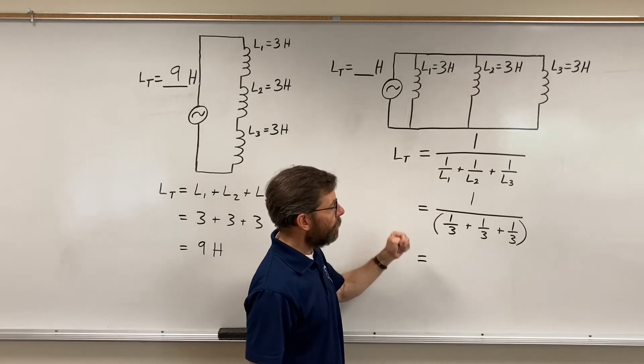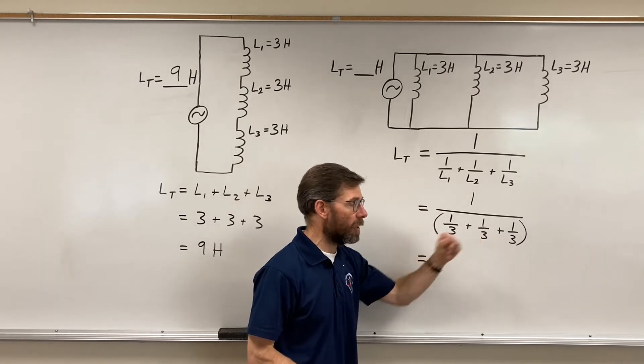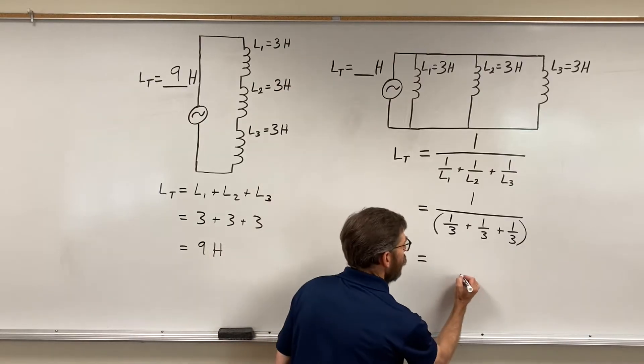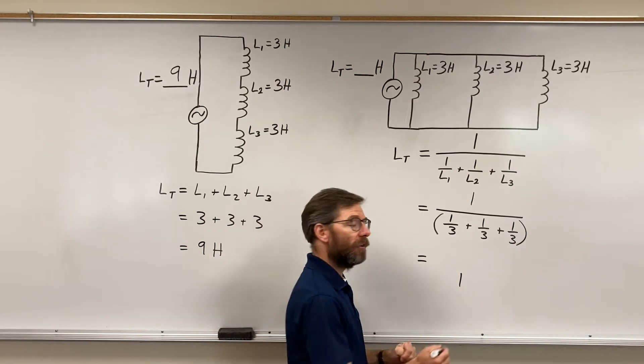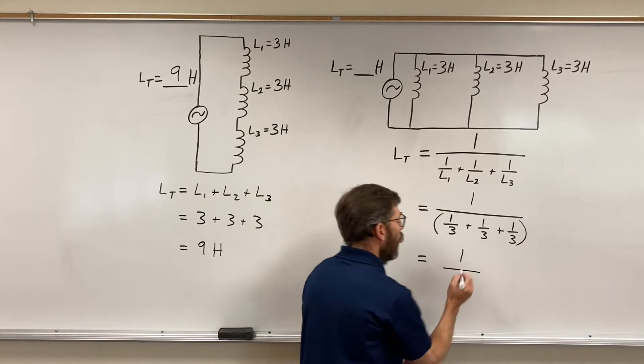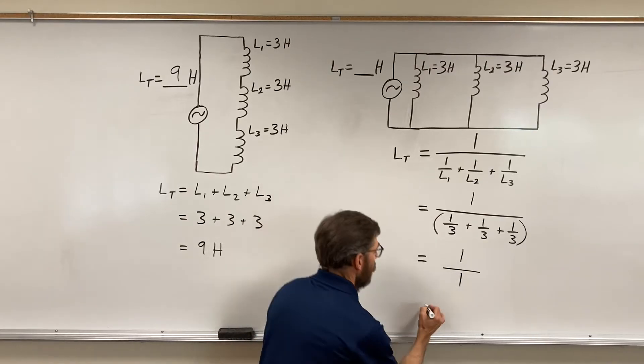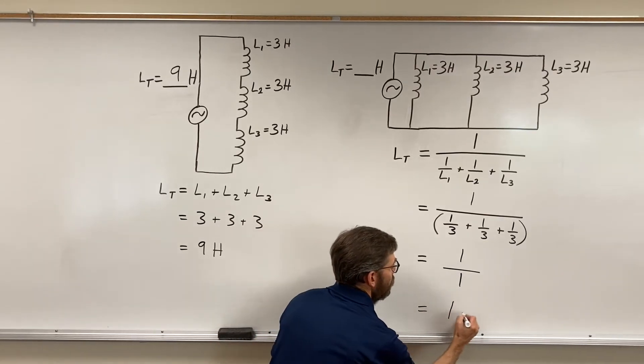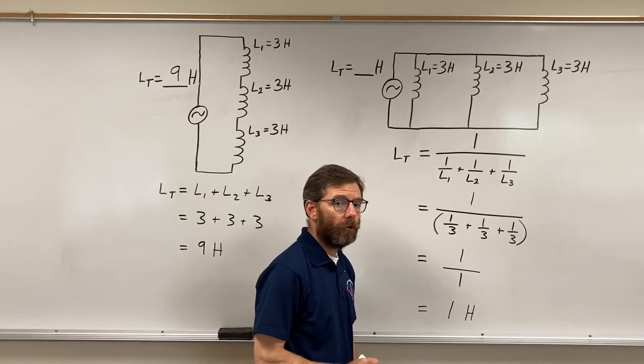One over three plus one over three plus one over three. Here, because the numbers are relatively simple, I've got one third plus one third plus one third, so I know that's going to be one on the denominator, one on the numerator, and therefore simply equals one Henry.